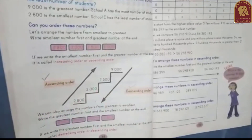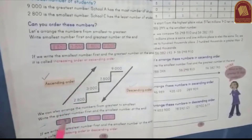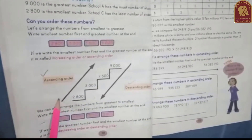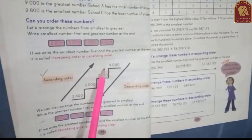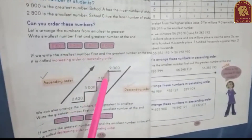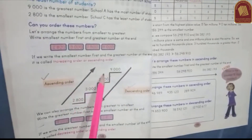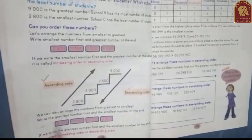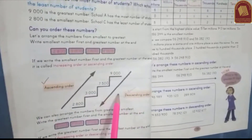जैसे कि आप arrow को देख रहे हैं कि वो upward को जा रहा है, ऊपर को जा रहा है। तो इसका मतलब है कि ascending order में जो numbers हैं उनको smallest to greatest number तक लिखते हैं — यानि सबसे छोटे number से सबसे बड़े number की तरफ लिखना ascending order होता है।